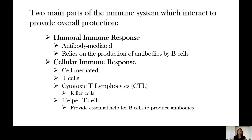There are two main parts of immune protection for our body. First, we have the humoral immune response, and the second one is the cellular immune response. When we say humoral immune response, this is antibody-mediated — they rely on the production of antibodies by the B cells.